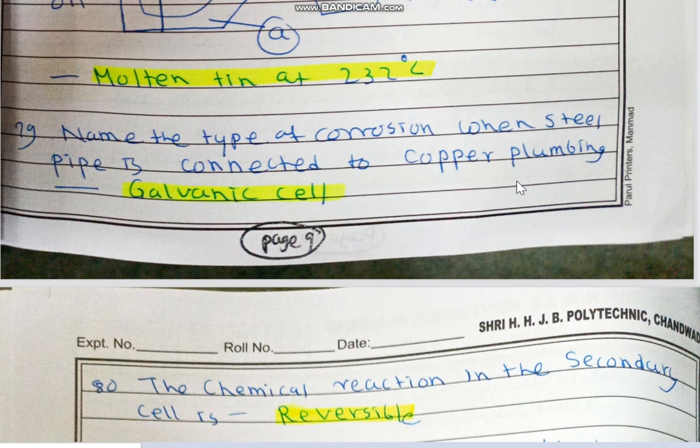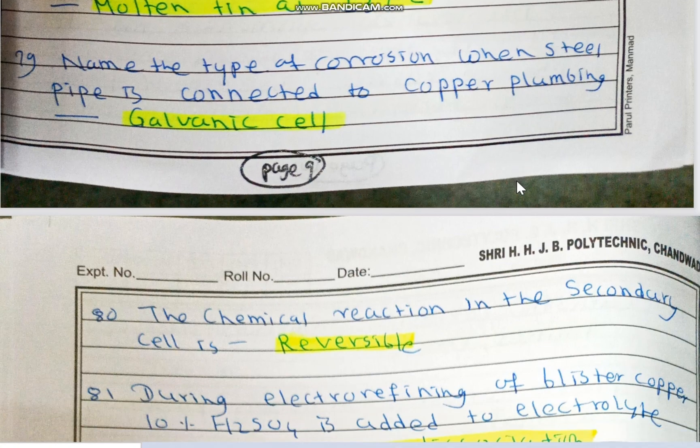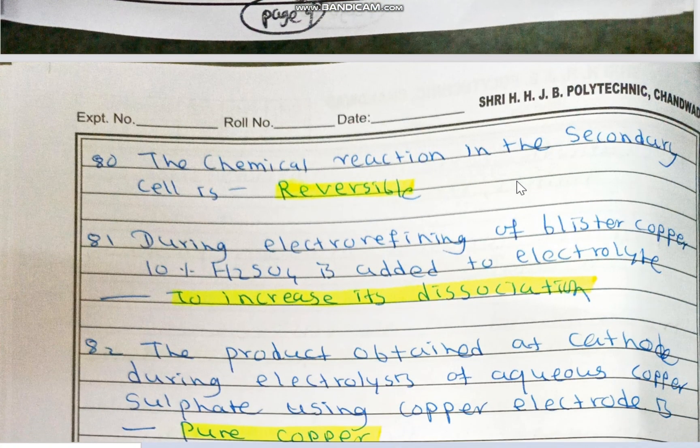Name the type of corrosion when a steel pipe is connected to copper plumbing — it is galvanic cell type of corrosion. Two different metals are in contact with each other; one metal gets corroded. This is galvanic cell formation.